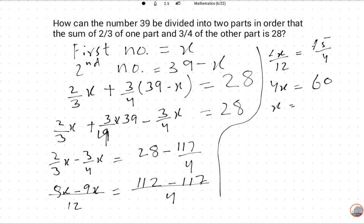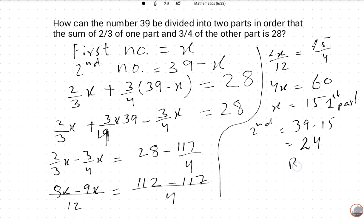So the first part is 15, and the second part is 39 minus 15 which is equal to 24. So this is the required answer.